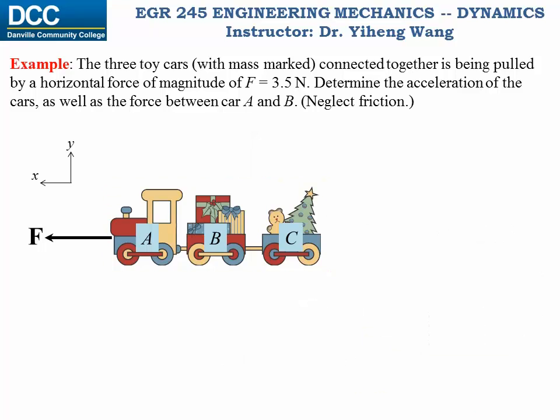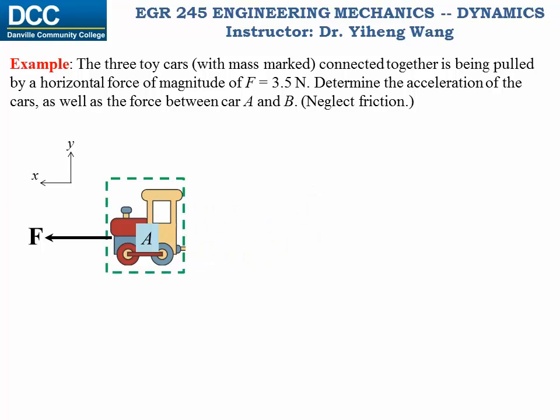For the second part of this problem, to solve for the force between car A and car B, we can no longer treat the entire toy car set as one system, because if that's the case, then the force between car A and car B is internal and cannot be solved. Therefore we need to draw the free body diagram of car A only. This way the force between car A and B is now exposed to be an external force. We also need to include the weight force and support force, and this completes the free body diagram.